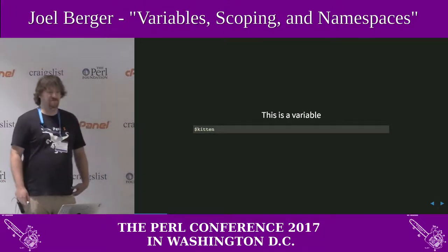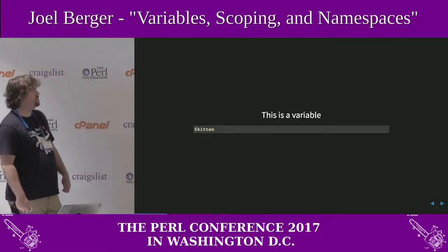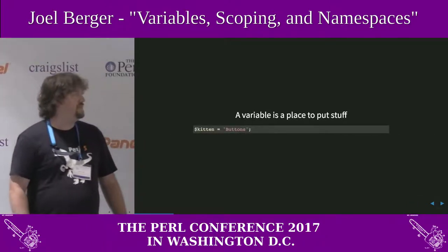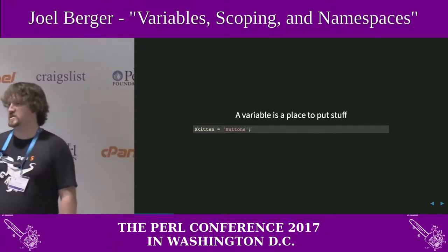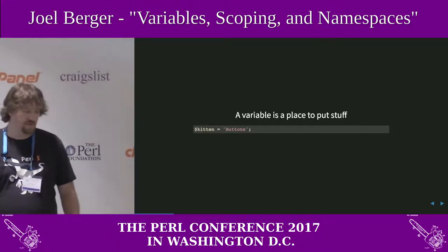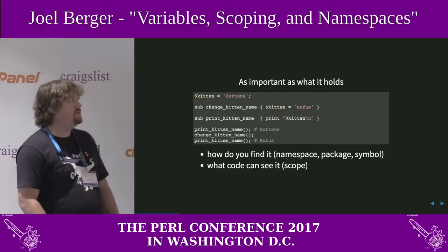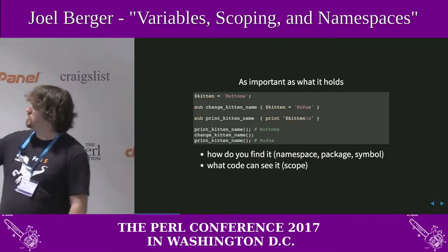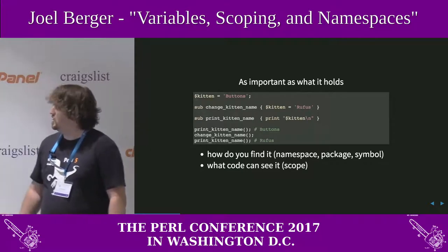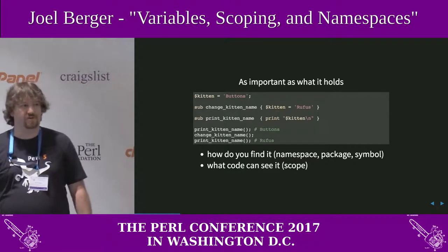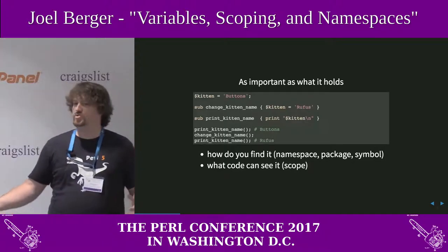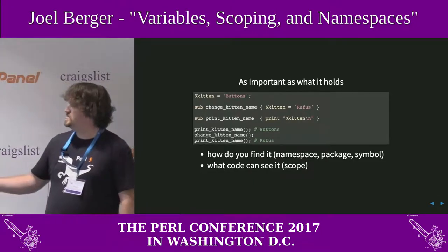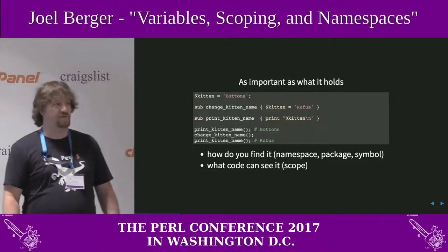So this is a variable. We're going to talk about the variable kitten. And a variable is a place to put some stuff. So this kitten is called Buttons. As important as what the variable holds are some other things like how do you find the variable — its name, first of all. We'll talk about things called packages and symbols. They're how you tell your code to talk to this variable. And also importantly, what code can see it? What is the scope of this variable?